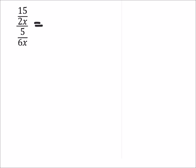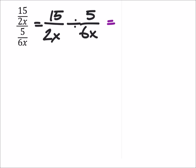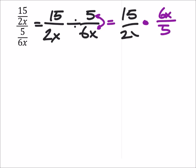So I'm going to rewrite this as a division problem with the division sign. So I got 15 over 2x divided by 5 over 6x. But we don't divide, we usually multiply by taking the reciprocal of the second fraction, which would be 6x over 5, and this now is being multiplied by 15 over 2x.